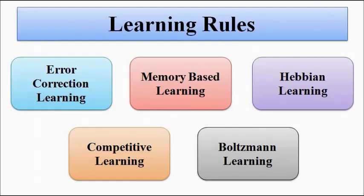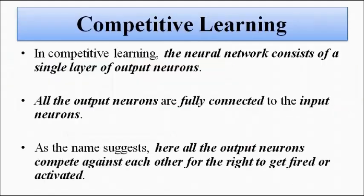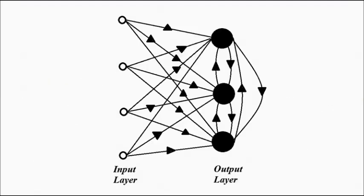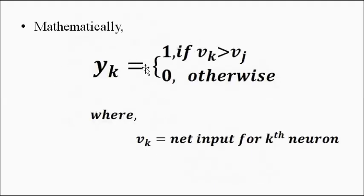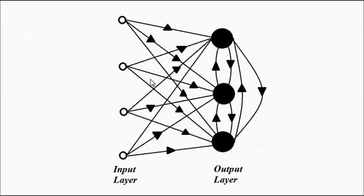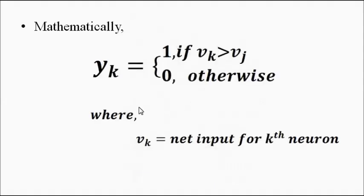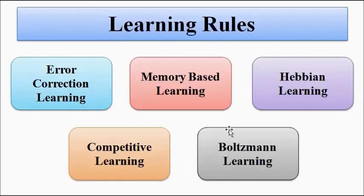So this is the whole concept of competitive learning — a competition between output layer neurons where the neuron with the maximum combined input or induced local field wins, its output is set to 1, and all the other neurons' output values are set to 0. In the next video we will discuss Boltzmann learning. I hope you liked this video — please subscribe to Engineering Tutorial for more videos related to engineering, science, and technology. Have a great day, thank you.